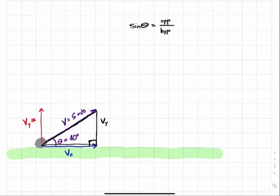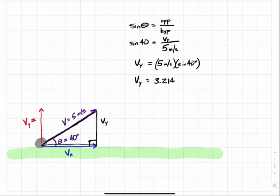Let's substitute in numbers here. Sine of 40 degrees equals V in the y direction divided by the hypotenuse of 5 meters per second. So Vy equals 5 times the sine 40 degrees, which equals about 3.214 meters per second.